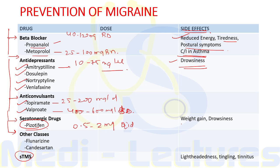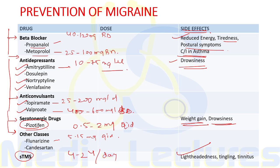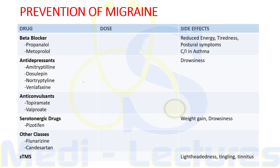Other preventive drug classes include flunarizine — a calcium channel blocker — given at 5 to 15 mg once daily, and candesartan. Single-pulse transcranial magnetic stimulation can be used at 4 to 24 pulses per day for prevention, with side effects including lightheadedness, tingling, and tinnitus.